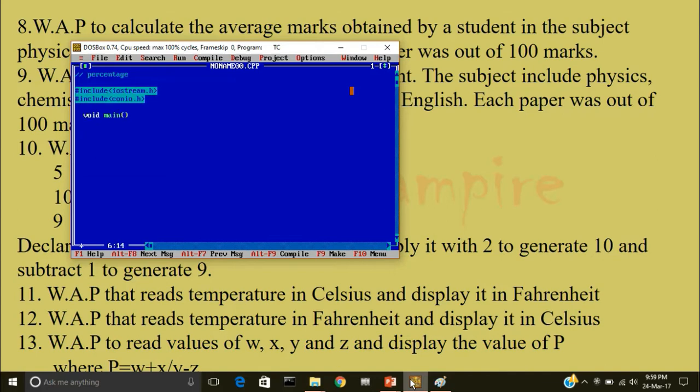Then I'll write void main. Open the main body of the program, clear screen. I'll declare total 5 variables for storing marks obtained in 5 subjects and to find the sum and answer.